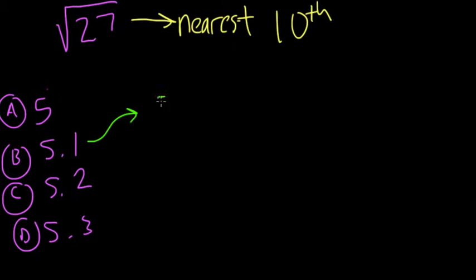Let's start with 5.1 squared, right? Because if that is the nearest square root of 27, it should be 5.1 squared, at least, should be pretty close to 27. Let's try it out.